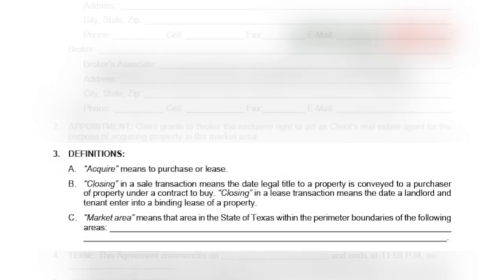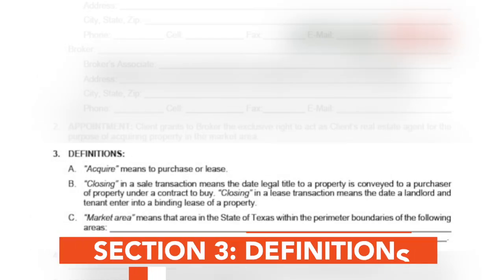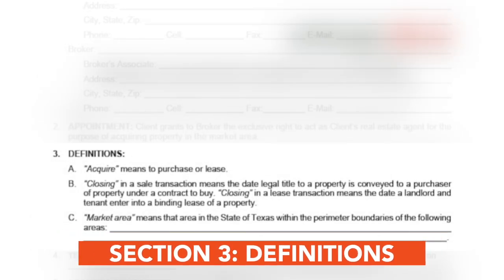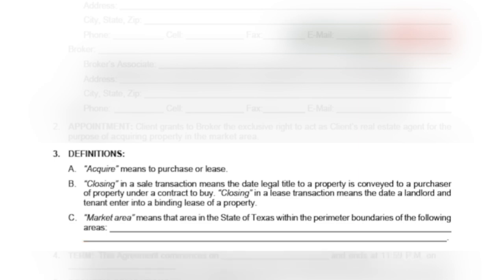The third section of the form is Definitions. It defines what it means to acquire, covering both purchases and leases. It defines a closing in each context, and it also allows you to define the market area. If you forget or don't fill it in, all of Texas is the default market area.